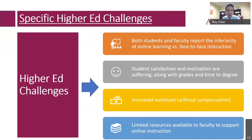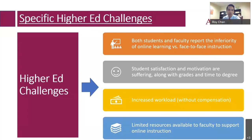Some key specific higher education challenges that I've highlighted in the book fall into four categories. First, both students and faculty report the inferiority of online learning versus face-to-face instruction. Many American students question the value of online learning and view it as somewhat inferior or not as high quality compared to face-to-face instruction, yet they have to pay about the same amount of tuition and fees. Another key challenge is that student satisfaction and motivation are suffering. Surveys show students are not as satisfied with online courses compared to face-to-face instruction.